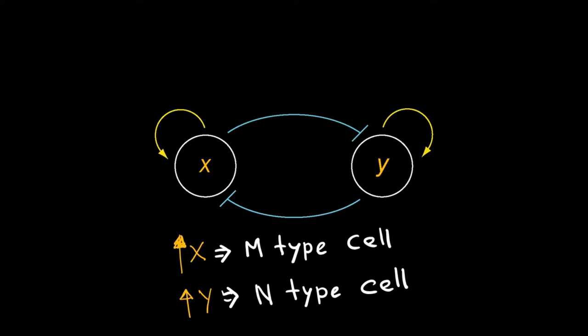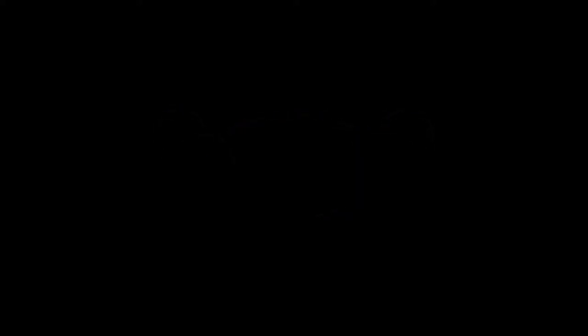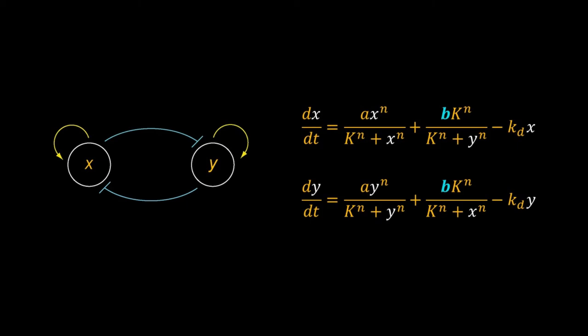x and y repress each other but they also regulate themselves through positive feedbacks. Such mutual repression with auto-regulation is widespread in molecular networks that control the differentiation of stem cells. We model this circuit using a system of ODEs. The second component in both the ODEs represent mutual inhibition and b is a constant representing the rate of expression controlled by the repressor. Suppose a molecular signal can moderate the value of b and control differentiation.